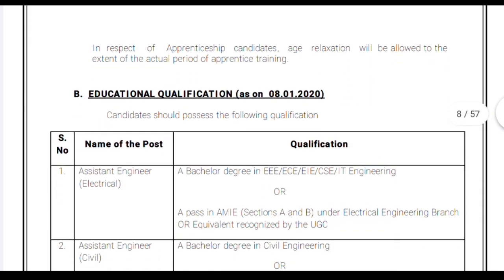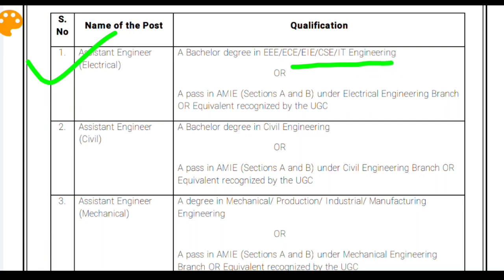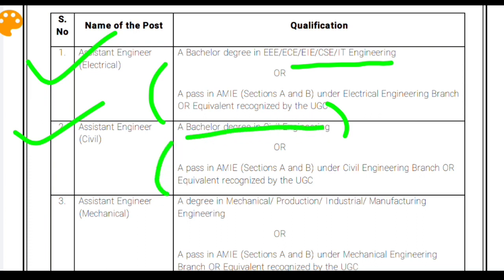Regarding qualifications, for Assistant Engineer in Electrical Engineering you have to obtain a bachelor's degree in Electrical Engineering, Electronics and Communication Engineering, Computer Science and Engineering, or Information Technology. Alternatively, you can pass Section A and B of the equivalent branches from the Institution of Engineers India — popularly known as AMI. AMI degree holders are also eligible. For Assistant Engineer Civil, you need a bachelor's degree in Civil Engineering or must pass Section A and B of AMI.